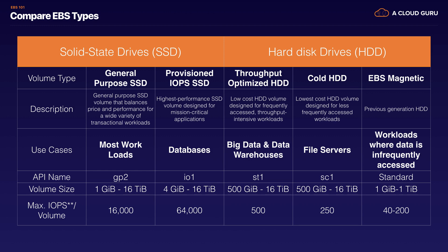We then have all our different hard disk drive options: throughput optimized hard disk drive, cold hard disk drive, and EBS magnetic. Throughput optimized is for optimized throughput, so where you would use this would be things like big data and data warehousing. It's known as ST1, and its maximum IOPS per volume is 500. Cold hard disk drive is the lowest cost hard disk drive volume and it's designed for less frequently accessed workloads, such as file servers. The IOPS on this is not great — it's 250.